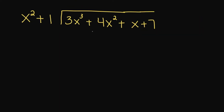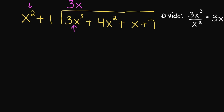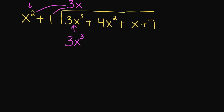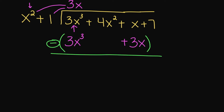Let's try this example. What number do I need to multiply my x squared with that's going to give me 3x cubed? That's going to be 3x, because 3x times x squared gives us 3x cubed. Then 3x times 1 gives us a positive 3x. Make sure when you are dividing to line up your variables so it's easier when subtracting. So 3x cubed minus 3x cubed cancels out. Then we have positive 4x squared, and x minus 3x gives us negative 2x.